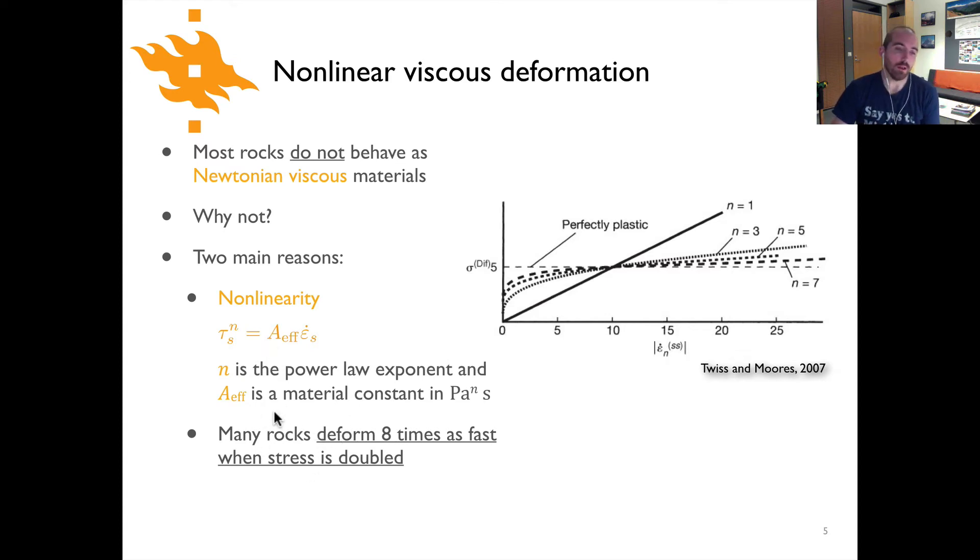Now the general idea here is that most rocks will deform about eight times as fast when you double the stress. So if this is a power law exponent, and typically for rock it's going to be something like two to four, you could take some stress here and if you double that stress and it's raised to the power of three for instance, that's going to result in eight times as fast of a strain rate if the material constant doesn't change.